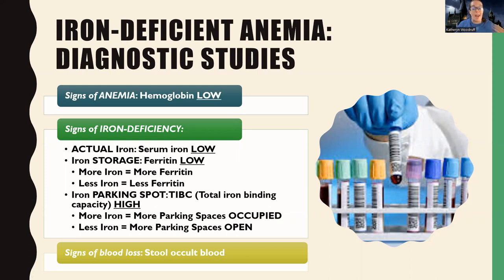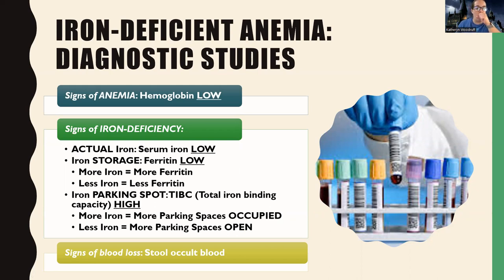The iron storage — called ferritin — is also going to be low. Ferritin works on a feedback loop with iron: if I have more iron, I'm going to have more ferritin because I need more places to store it. If I have less iron, I'm going to have less ferritin. So ferritin and iron work hand in hand.